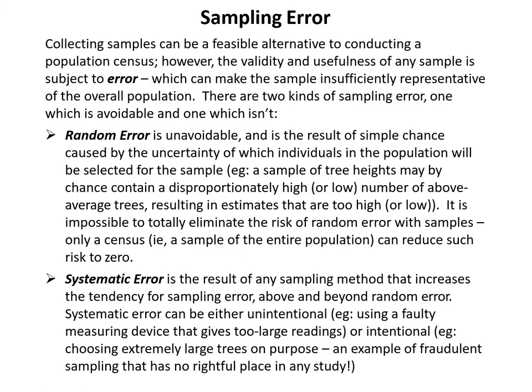When conducting a sample in place of a census, there's an introduced problem of sampling error. All samples are subject to error — error is anything that makes the sample potentially non-representative of the overall population. If the sample is insufficiently representative, that makes our study invalid. There are two kinds of sampling error: one is avoidable and one is not.